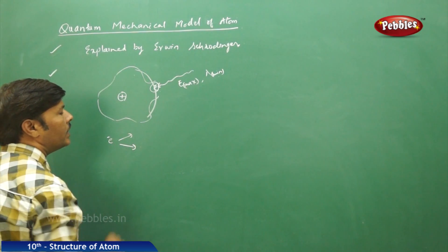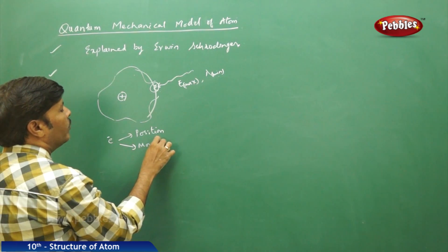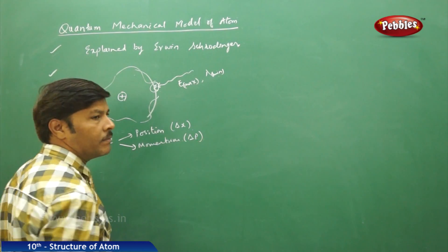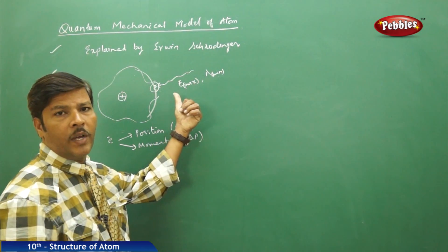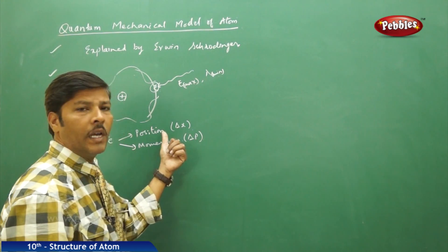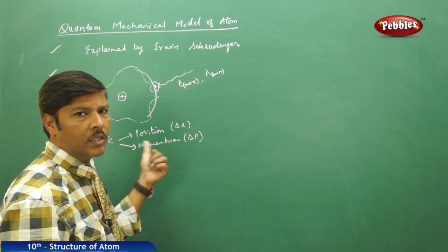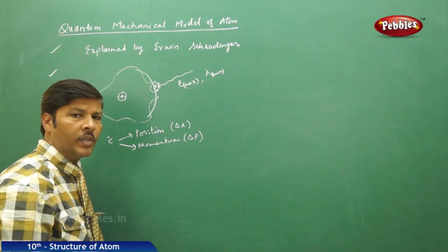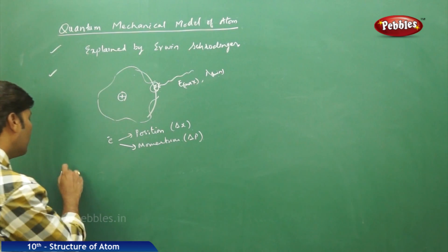The electron actually has two important properties: one is position, given by delta x, and the other is momentum, given by delta p. Erwin Schrödinger is of the opinion that when you pass radiation of maximum energy and minimum wavelength on the moving electron, we cannot simultaneously calculate both the position and the momentum of the electron. Simultaneous calculation is not possible — the position or the momentum of the electron becomes arbitrary or is thrown to infinity.